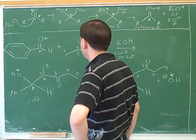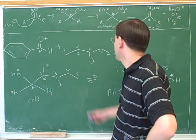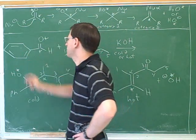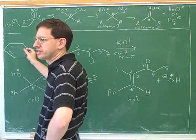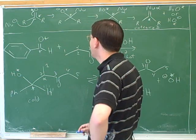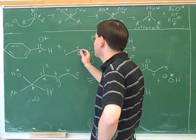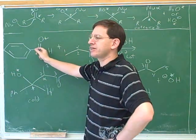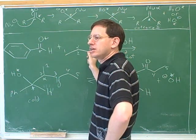This was a cross-aldol condensation. How did you know that we were going to form the enolate out of the right-hand compound and not the left-hand compound? You saw that there was no alpha hydrogens on the left compound. There's still one more question: how do we know that when this forms an enolate, it's going to prefer to attack the aldehyde instead of attacking another version of this ketone?